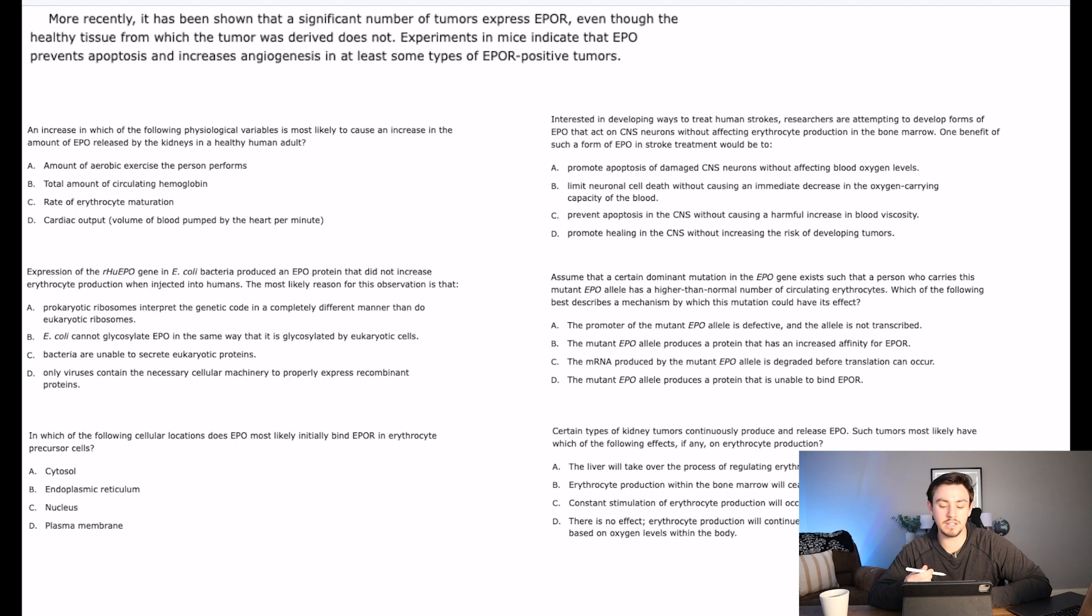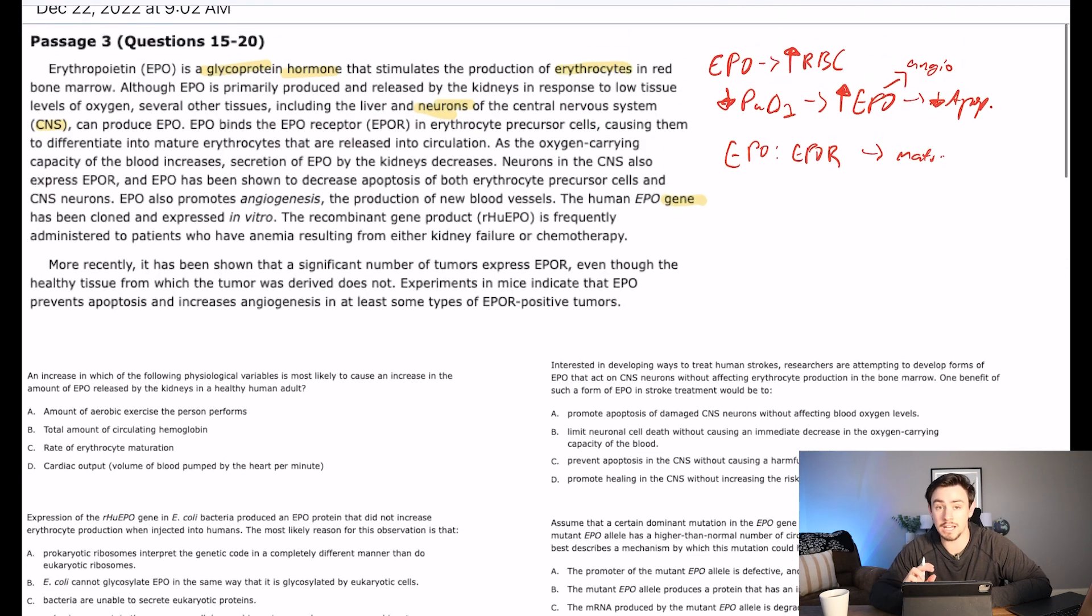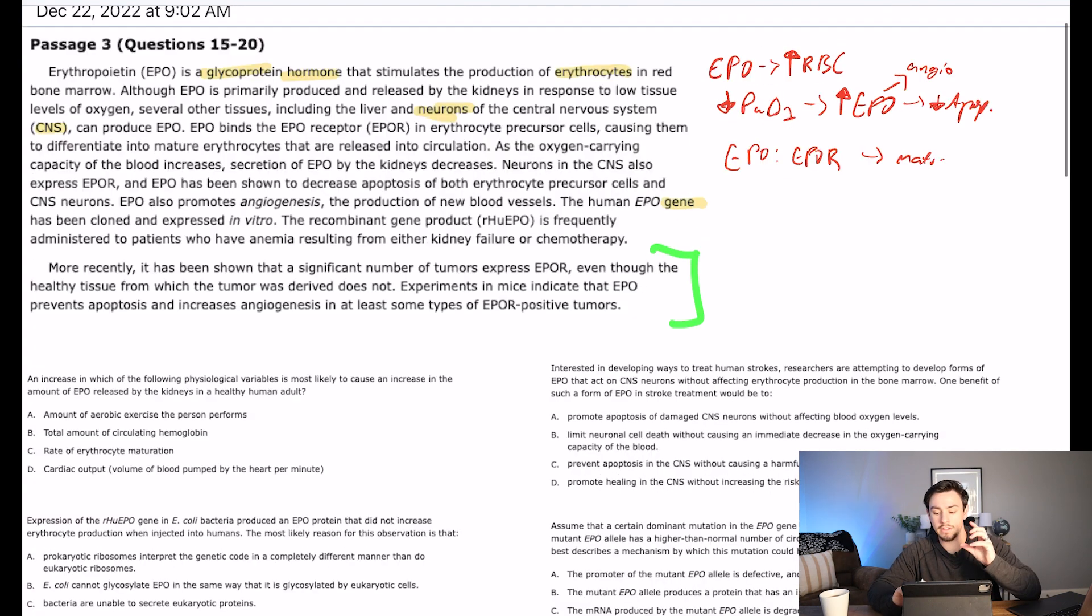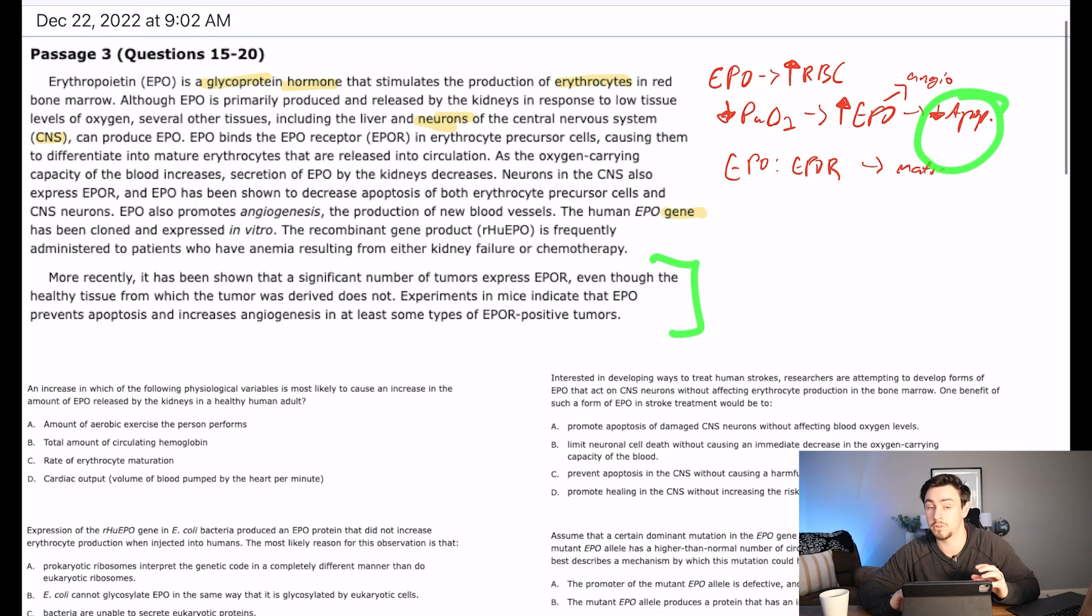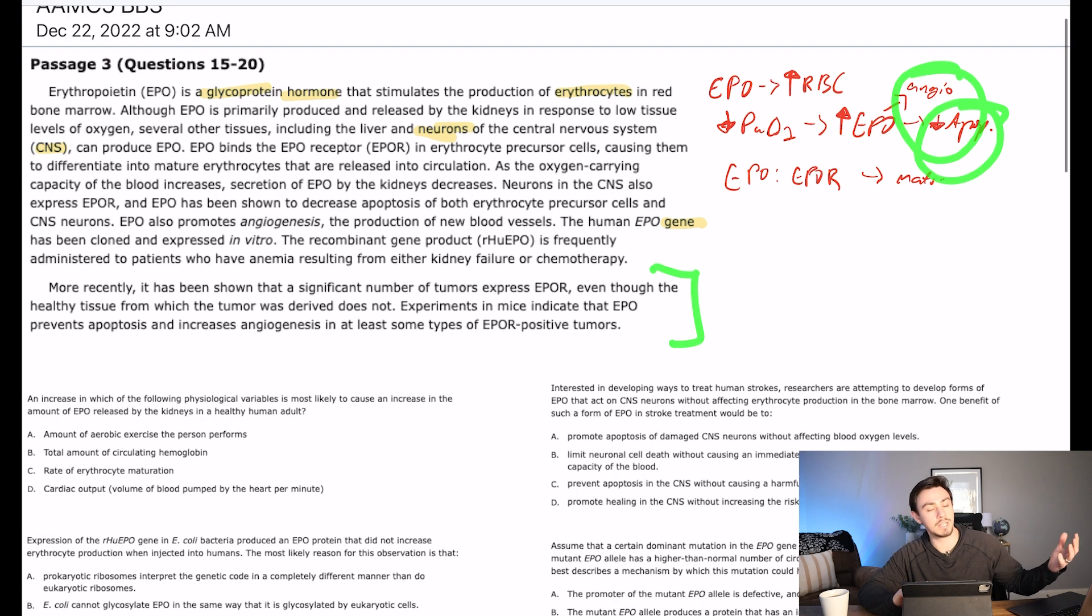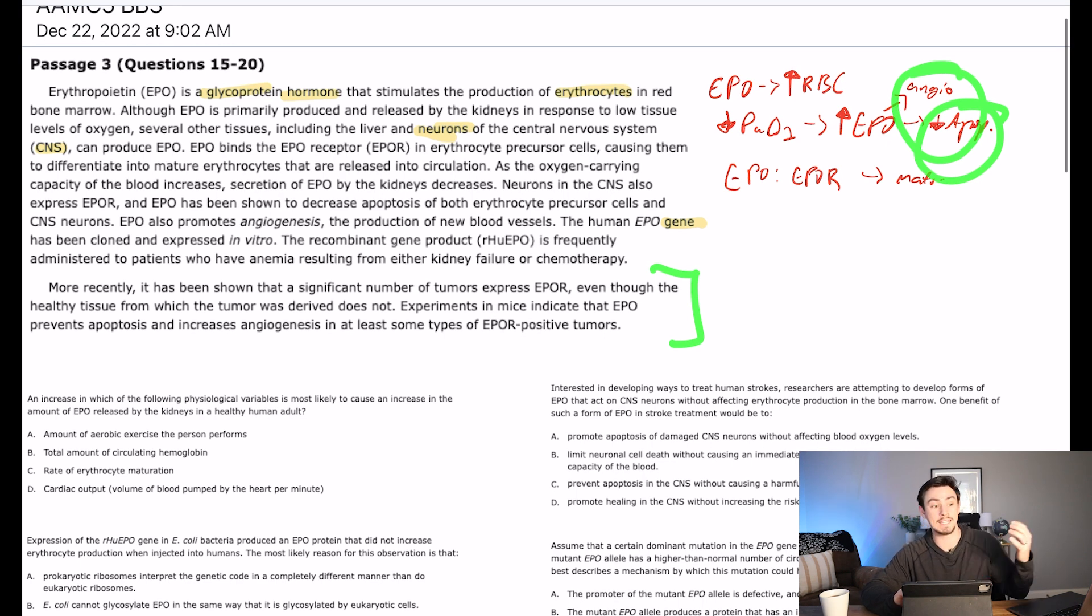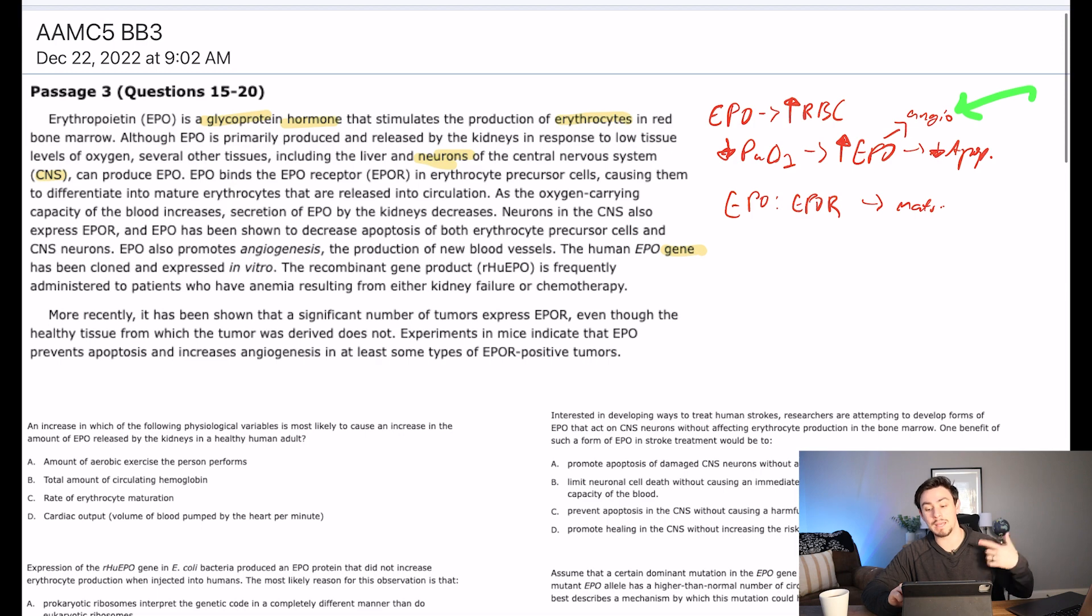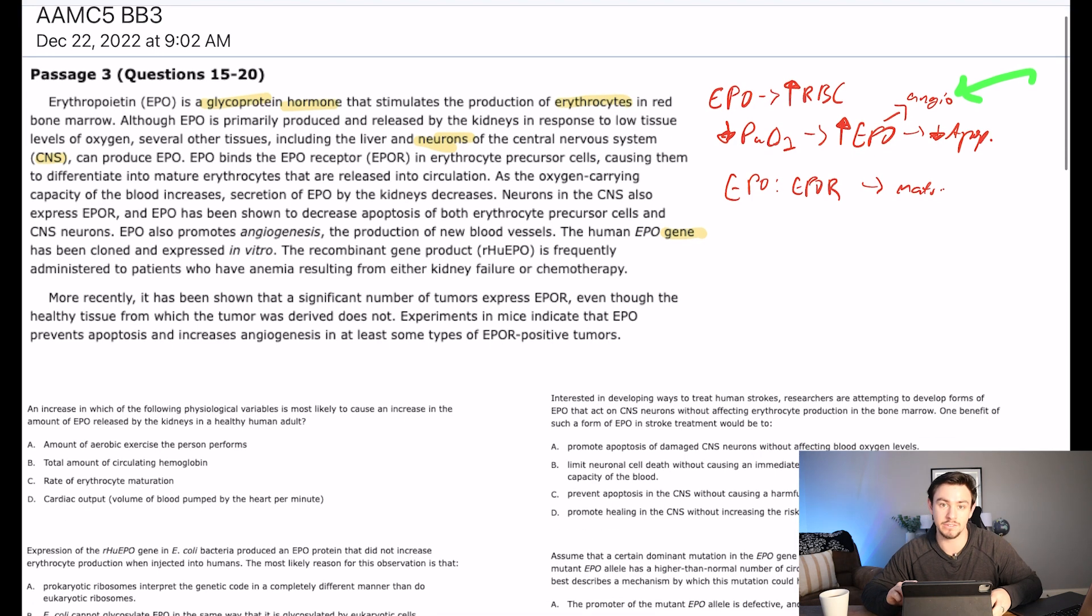More recently, it has been shown that a significant number of tumors express EPO-R, even though the healthy tissues from which the tumor was derived do not. Experiments in mice indicate that EPO prevents apoptosis and increased angiogenesis in at least some EPO-R positive tumors. So you'll learn a lot about this, about how tumor cells will hijack specific systems that our body has set in place and use them in kind of like a malicious way. So tumors will hijack this pathway that will decrease apoptosis, because a tumor cell does not want to die, right? And will increase angiogenesis, meaning that you will get more blood vessels feeding to the tumor, so that it can keep eating and keep growing. So it's not going to die and it's going to keep eating, so it's going to get bigger and bigger and bigger.